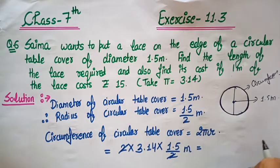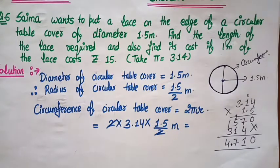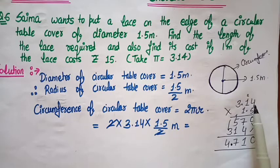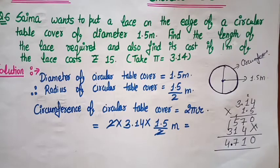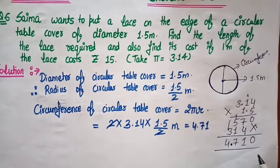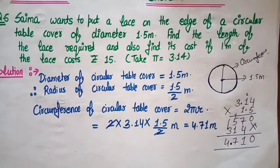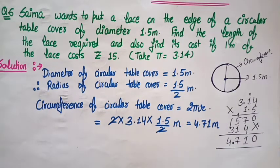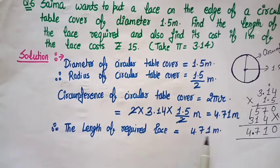Circumference of circular table cover = 2πr. Value: 2 multiplied by 3.14, and r is 1.5/2 meter — the 2s cancel. Now multiply 3.14 by 1.5, we get 4.710. Place the decimal correctly: two decimal digits in 3.14 and one in 1.5, so three total digits — giving 4.710.